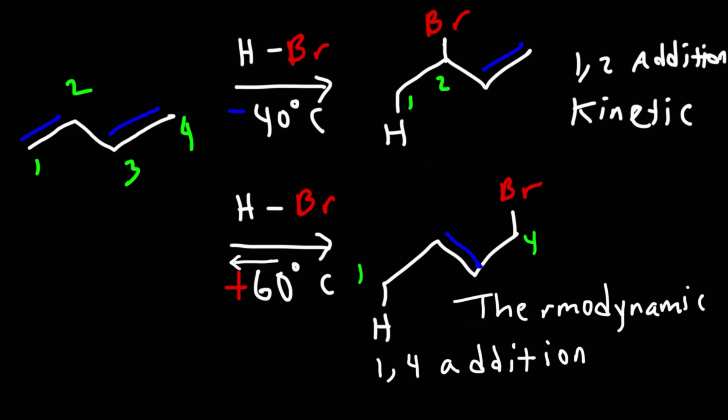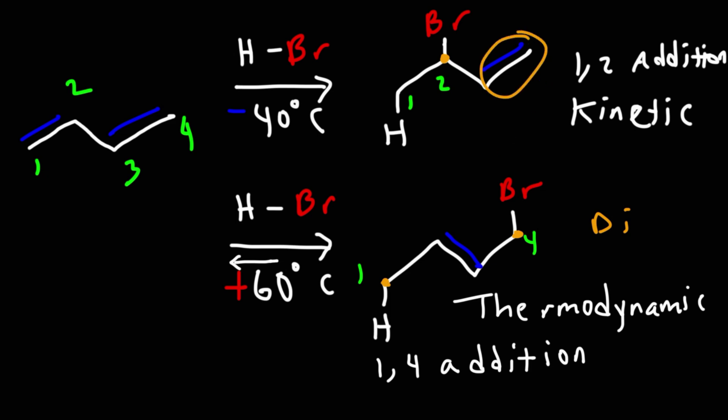Let's talk about why the thermodynamic product is the most stable product. The answer has to do with alkene stability. Notice the number of R groups attached to each alkene. The 1,4-addition product has two R groups — it's a disubstituted alkene. The 1,2-addition product only has one R group attached to the two double-bonded carbons, so it's a monosubstituted alkene and is the least stable of the two. The kinetic product is the product that forms faster at low temperatures. The thermodynamic product is the most stable alkene product that forms as the major product at high temperatures.